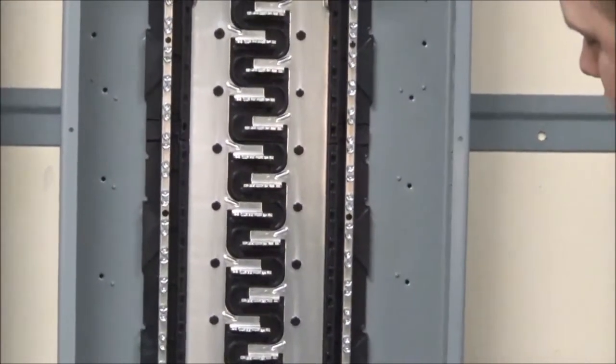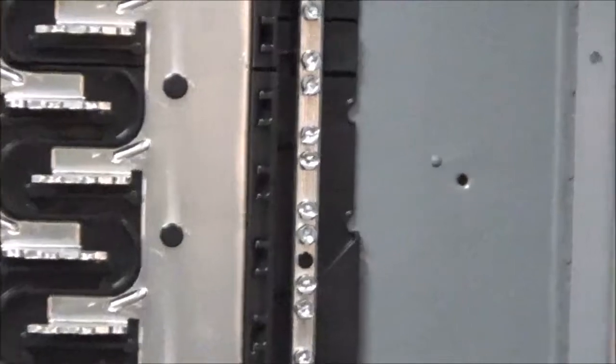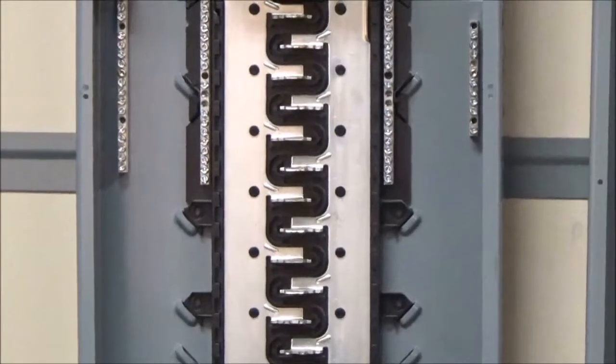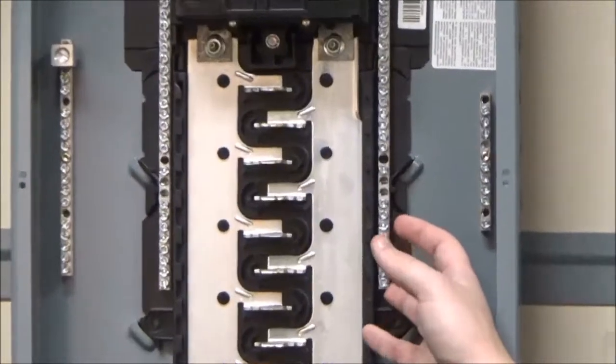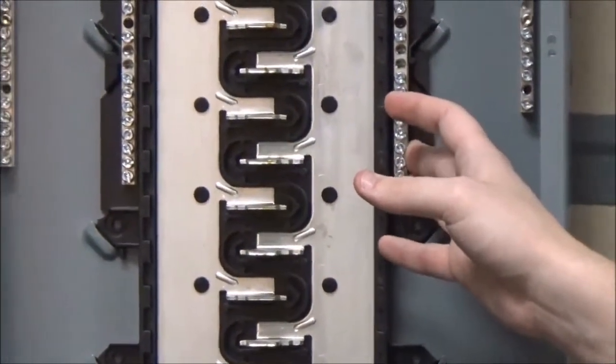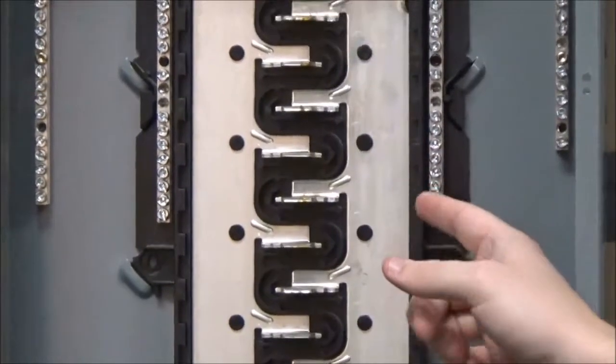You will see on the standard that the neutral bar just goes down as far as it has to accommodate enough neutral spots for the panel, and that all of the screws are directly next to each other instead of leaving spaces in between.